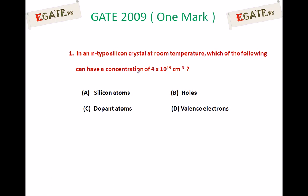In an N-type silicon crystal at room temperature, which of the following can have a concentration of 4×10¹⁹ per centimeter cube? A. Silicon atoms, B. Holes, C. Dopant atoms, D. Valence electrons.